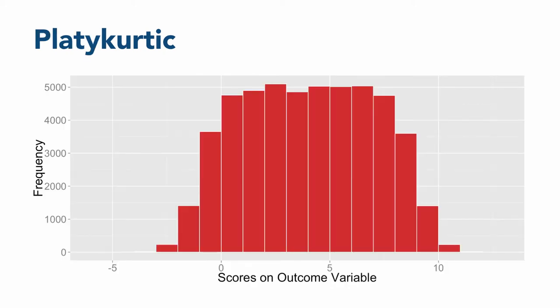A platycurtic distribution, on the other hand, is relatively flat. Platycurtic means flat bulge. Think of the flat-tailed platypus, or a flat-topped plateau. This kind of distribution can happen when you have censored values, which means that scores can't go above or below a particular value. As a result, it tends to have very few outliers. The value of kurtosis for a platycurtic distribution is negative.